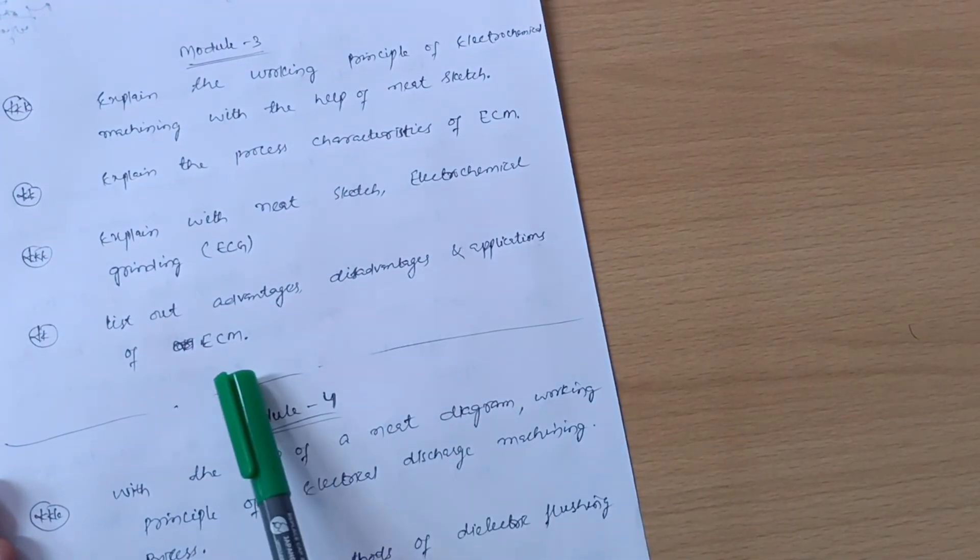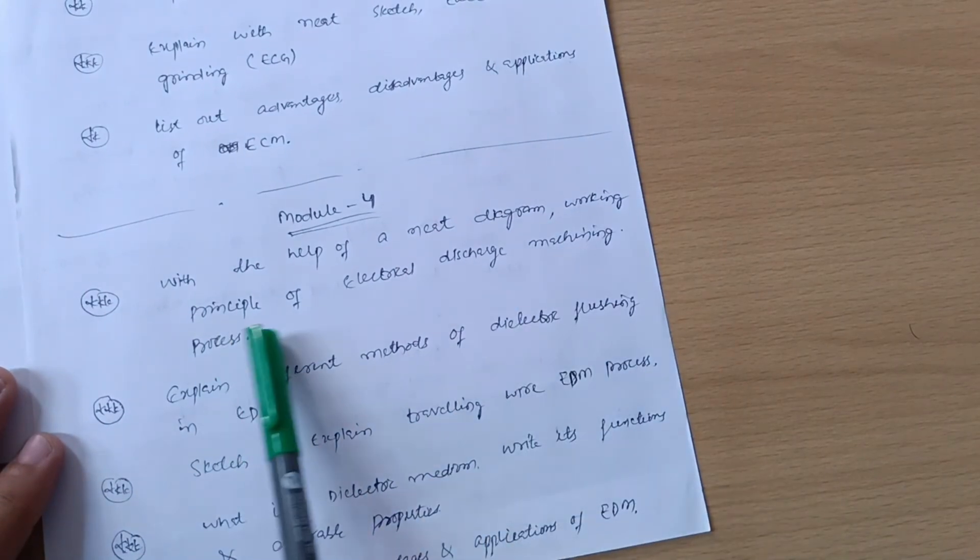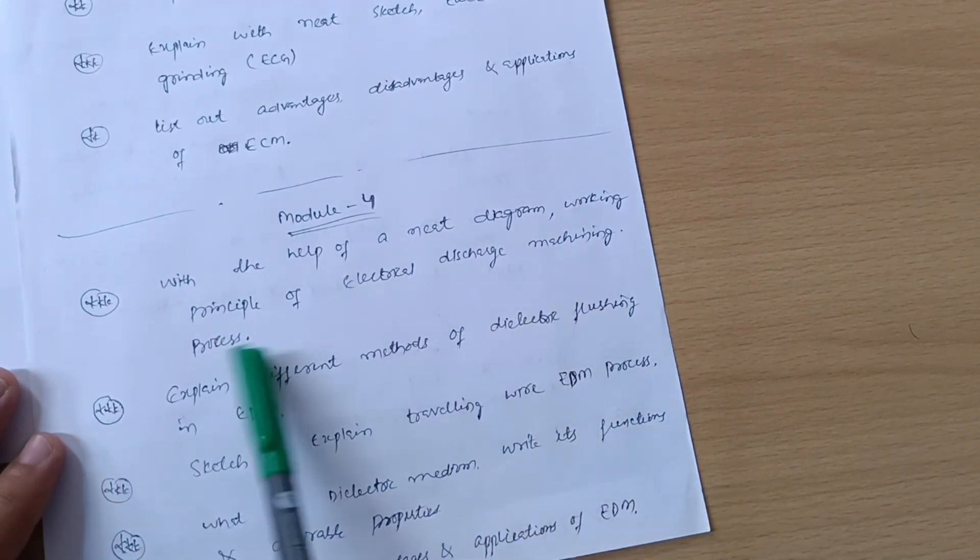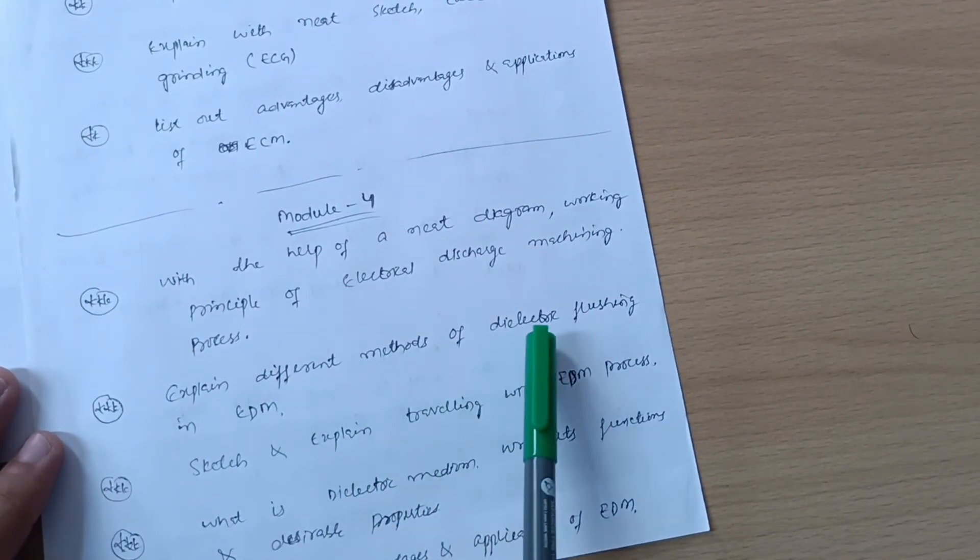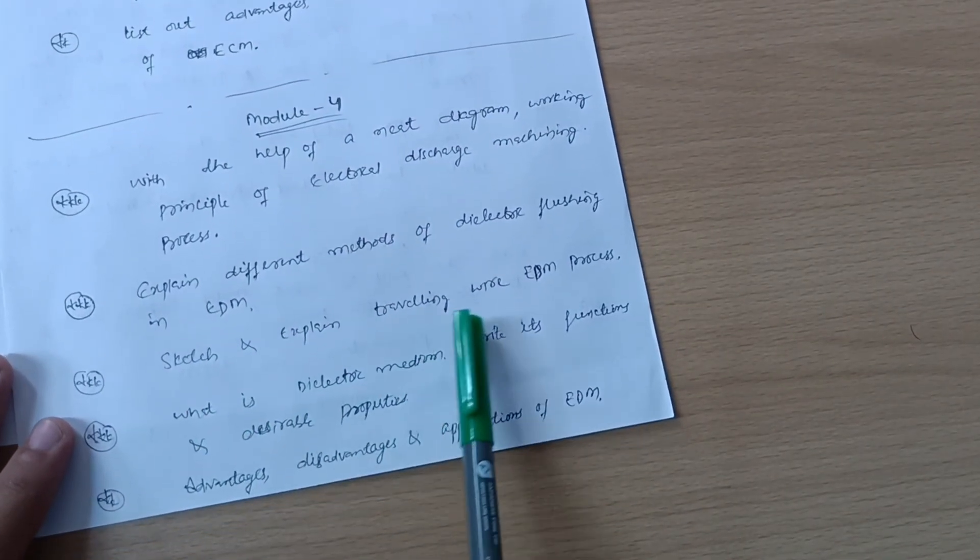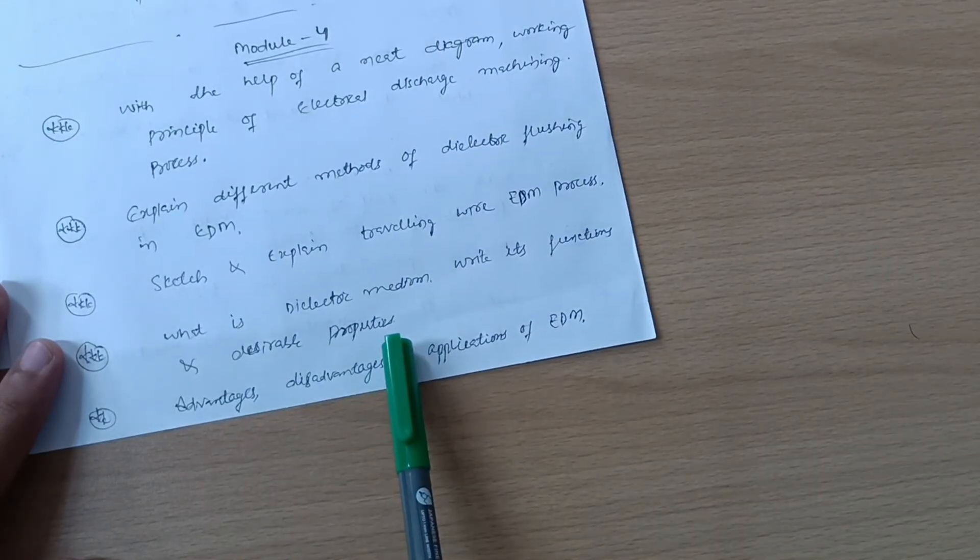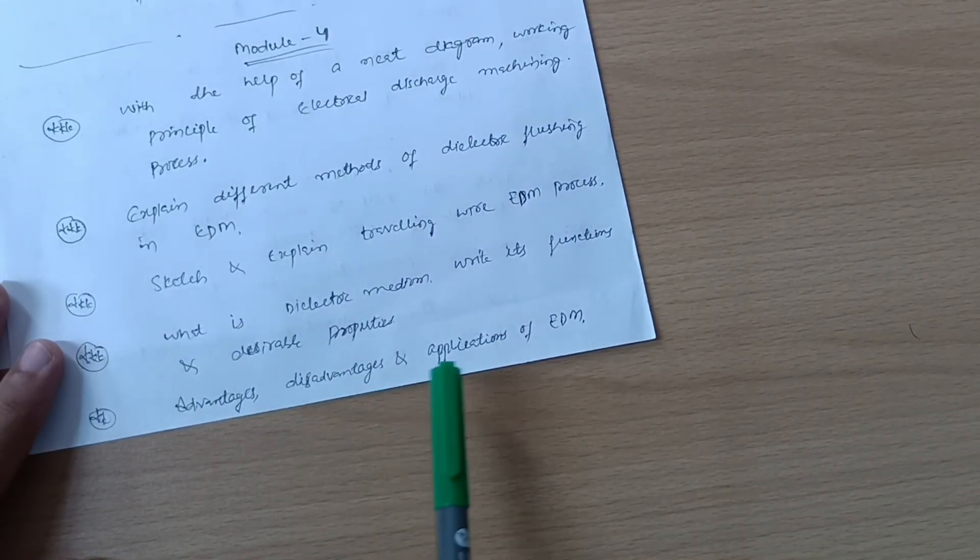Next is model four: with the help of a neat diagram working principle of electrical discharge machining process, explain different methods of dielectric flushing in EDM, sketch and explain traveling wire EDM process, what is dielectric medium write its functions and desirable properties, advantage disadvantage and applications of EDM. This is all about model four.